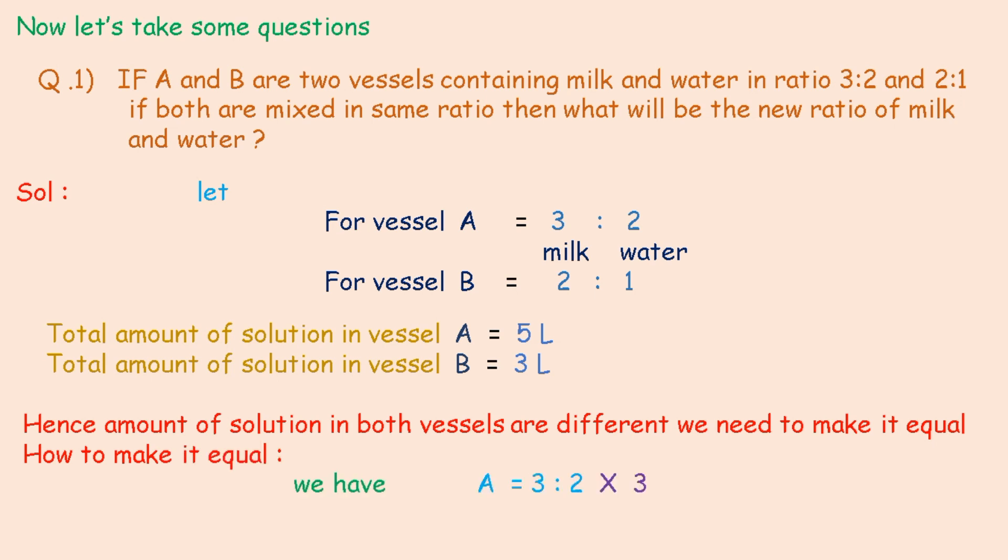We have A is equal to 3 ratio 2 multiplied by 3, and B is equal to 2 ratio 1 multiplied by 5. We have multiplied A by 3 because total amount of solution in vessel B is 3 liters.